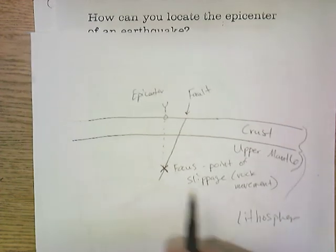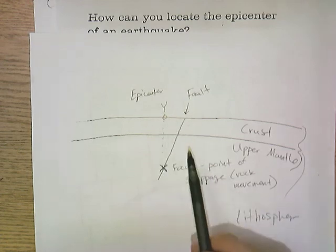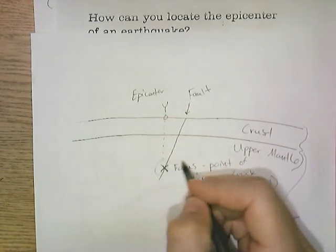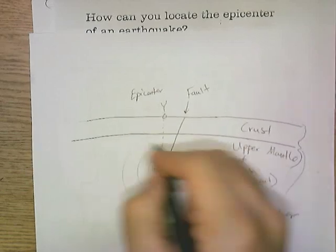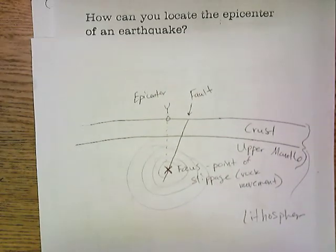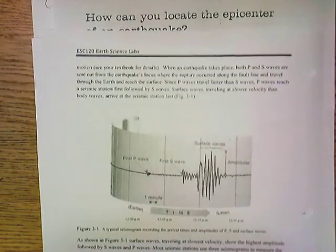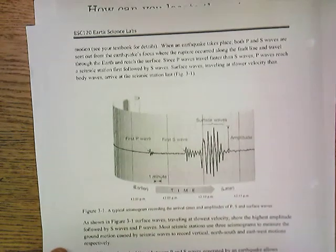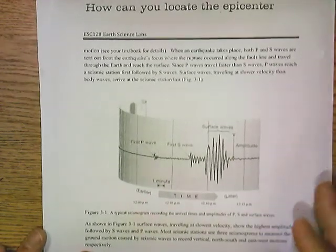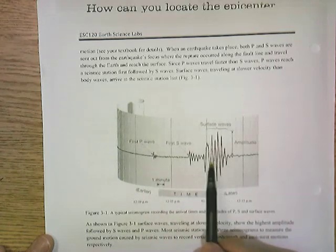So the epicenter is the location on land and we're really measuring how these waves are then sent off in all directions. So this is kind of what you would see then if you were some city, some location that's near and you had a seismogram that was reading on a seismograph.